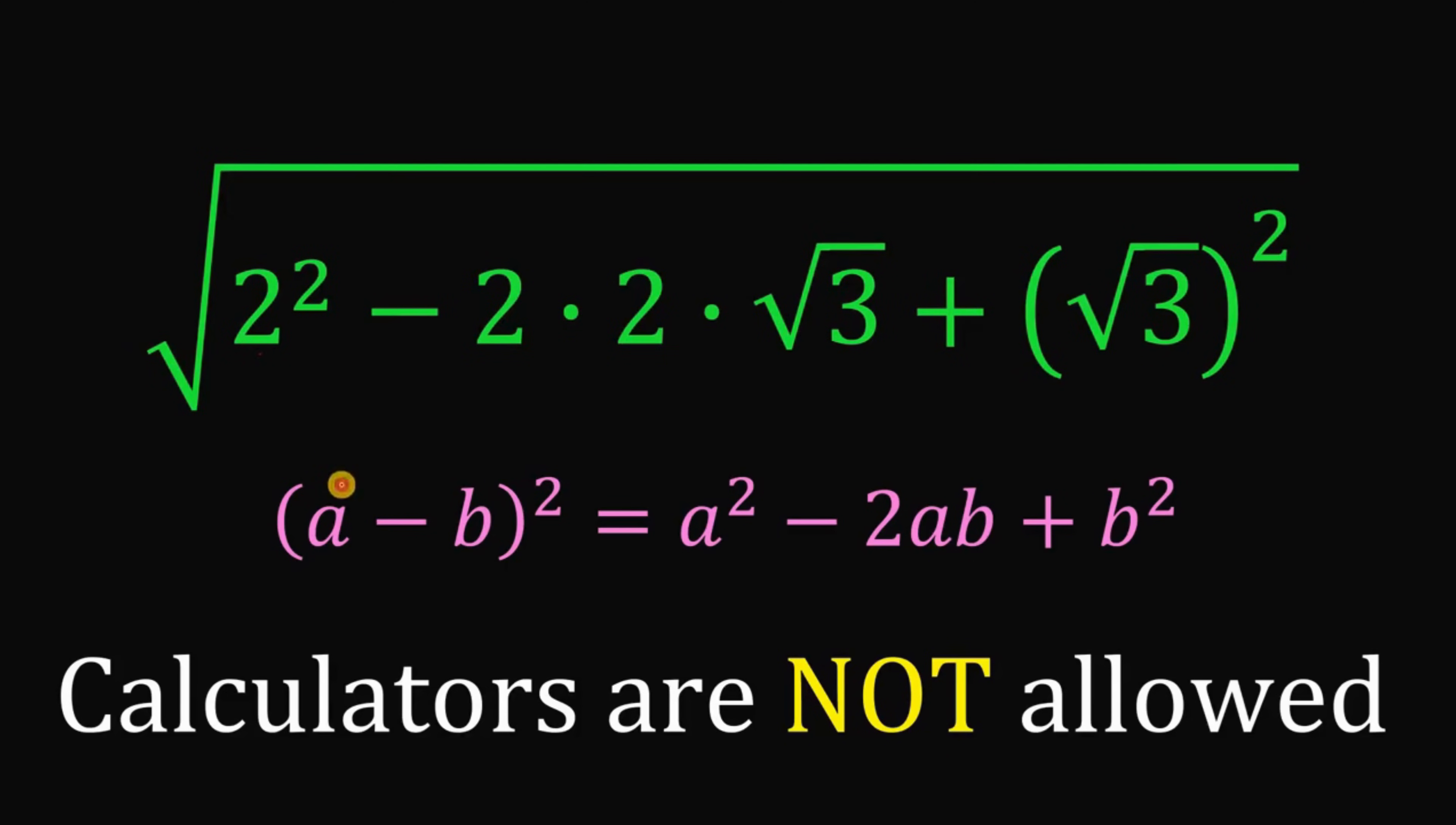So now, if a is 2 and b is square root of 3, if we expand this, we can see that we have here a squared or 2 squared minus 2, this is 2, times a which is 2, times b which is square root of 3, plus square root of 3 squared or simply b squared.